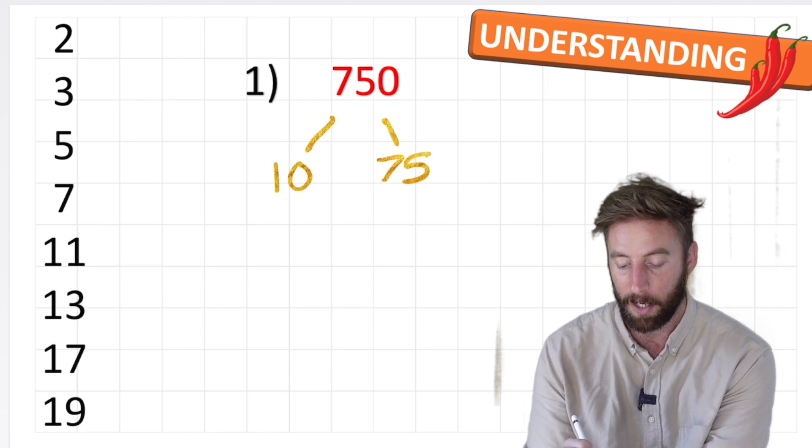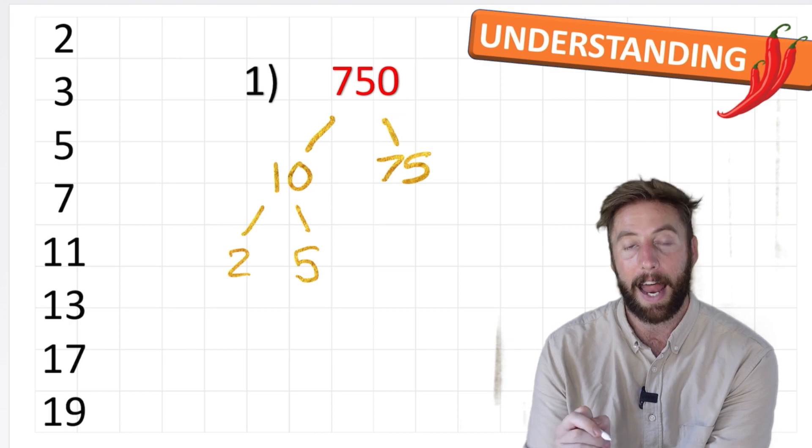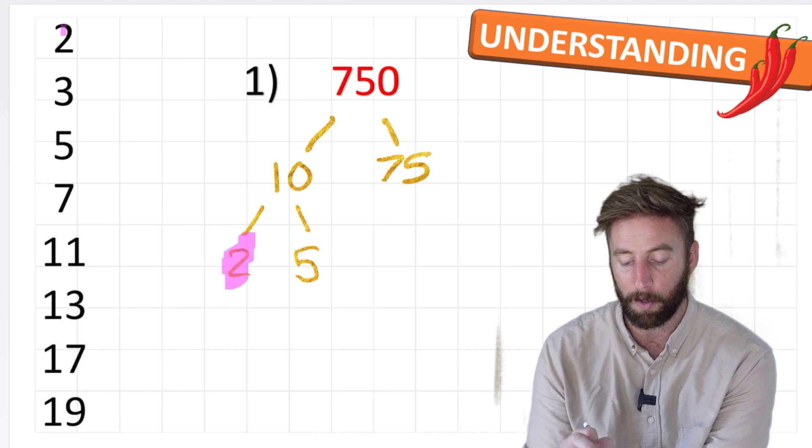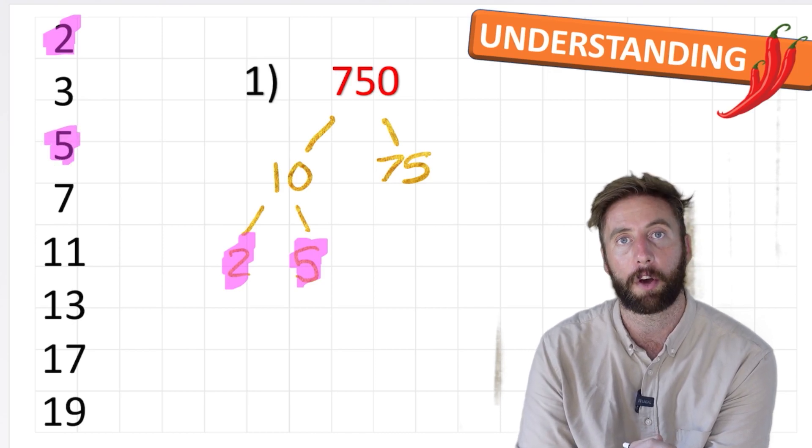I'm going to start with this branch here, 10. 10 can be made up of a 2 and a 5. Now, have I found any prime numbers? Yes, I found the 2 which is prime and I've also found the 5 which is also prime.